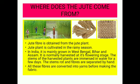Where does the jute come from? Jute fiber is obtained from the jute plant. The jute plant is cultivated in the rainy season. In India it is mainly grown in West Bengal, Bihar, and Assam, and it is normally harvested at its flowering stage. The stems of the harvested plants are immersed in water for a few days. The stems rot and fibers are separated by hand. All these fibers are then converted into yarns before making the fabric.